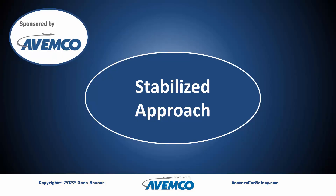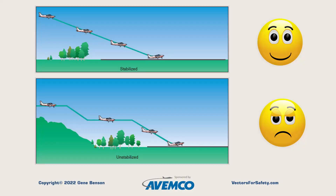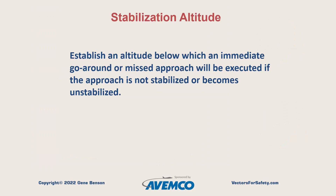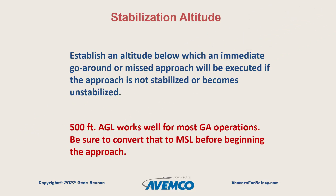One of the most important concepts for any landing is to establish and maintain a stabilized approach. If the approach path is not constant, then the approach is not stabilized. There are also some other elements to the stabilized approach. First, we must establish an altitude below which an immediate go-around or missed approach will be executed if the approach is not stabilized or becomes unstabilized. 500 feet AGL works well for most GA operations. Be sure to convert that to MSL before beginning the approach.